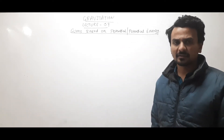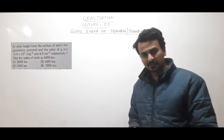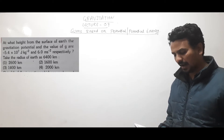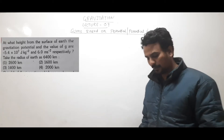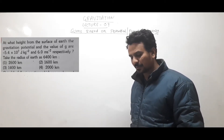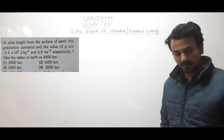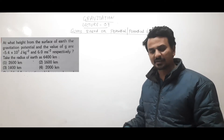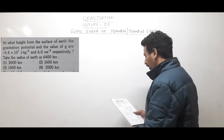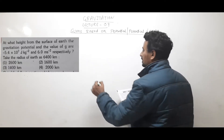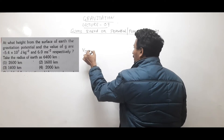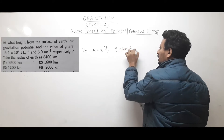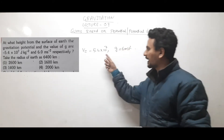The first question is: at what height from the surface of the earth are the gravitational potential and the value of g equal to -5.4×10⁷ and 6 m/s² respectively? Take the radius of the earth as 6400 km. This was a question asked in NEET 2016. So at what height will the value of potential and g become these given values?